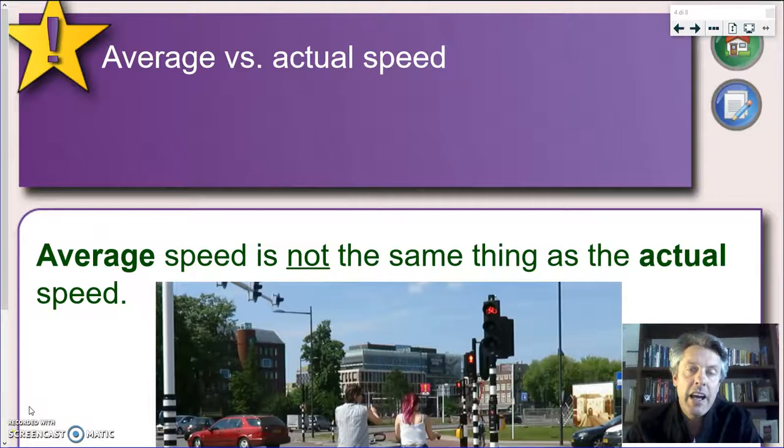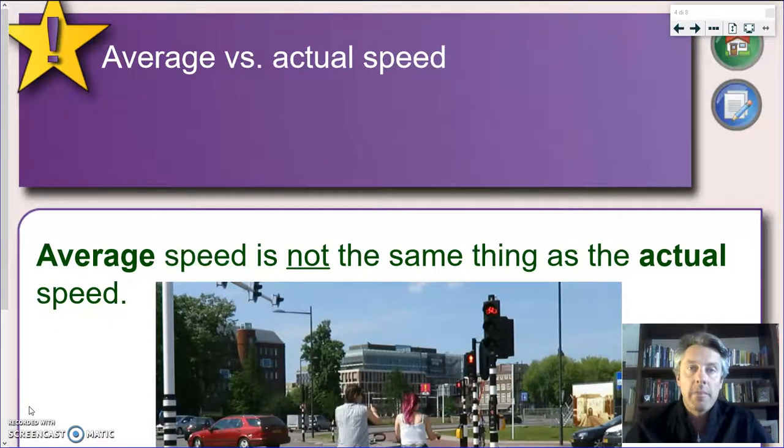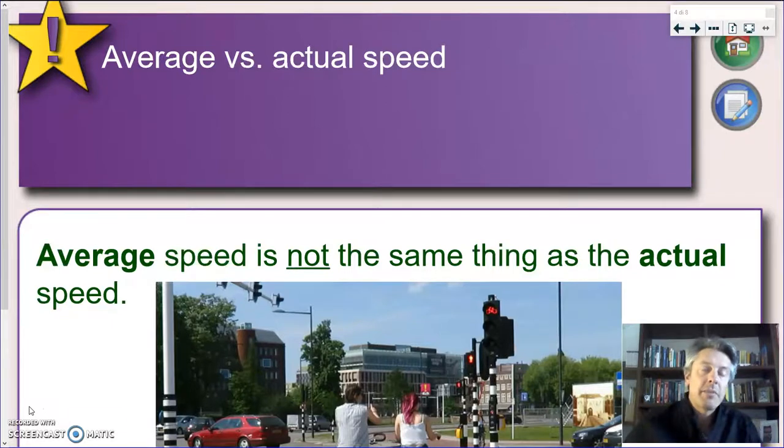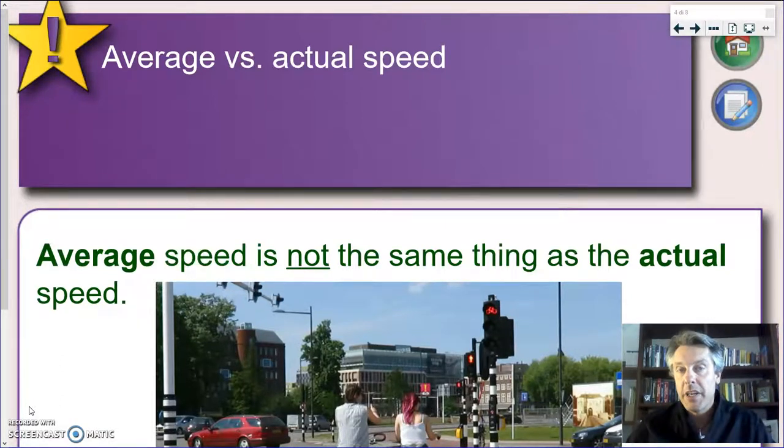Now you might have noticed how I use the word average speed and not just speed. And there's a good reason for that. Because when I am studying the movement of an object, and I just take into account the whole distance that object has covered and the time it's taken, I'm doing an average. Because what happens in reality, an object may not keep always the same speed.